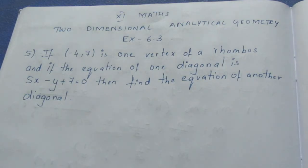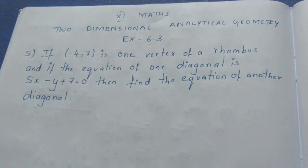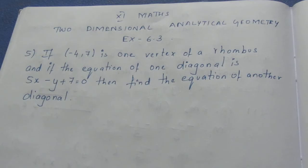The question asks: If (-4, 7) is one vertex of a rhombus and if the equation of one diagonal is 5x minus y plus 7 equals 0, then find the equation of the other diagonal.